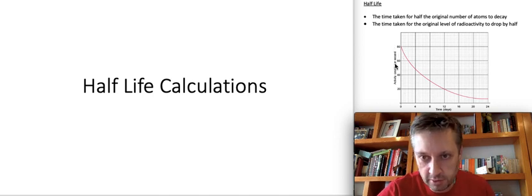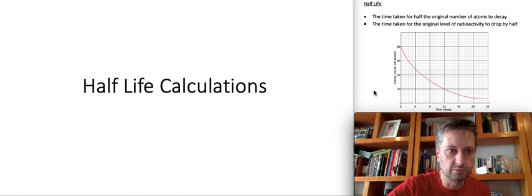Here we've got radioactivity in counts per second. We're starting at 80 counts per second. So therefore the half-life is the time taken to drop from 80 to 40. And that time on the y-axis is, it looks to me, somewhere around six days. Okay, let's move on.